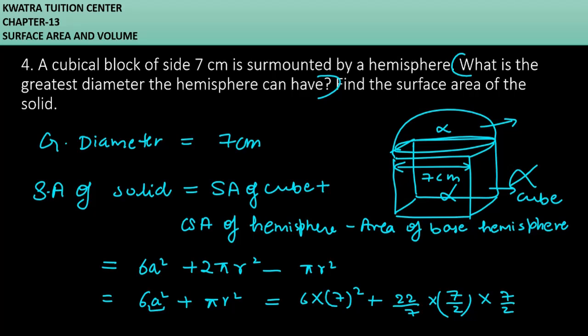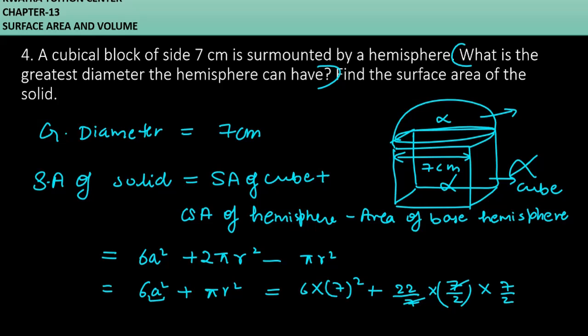Now reducing the value, we'll get 7 by 7 cancelled, 22/2 cancelled, you will get 11. 11 into 7 divided by 2, so you get 294 plus 77 over 2, which is 38.5. Adding it to 294, so it will give you 332.5 centimeter square.